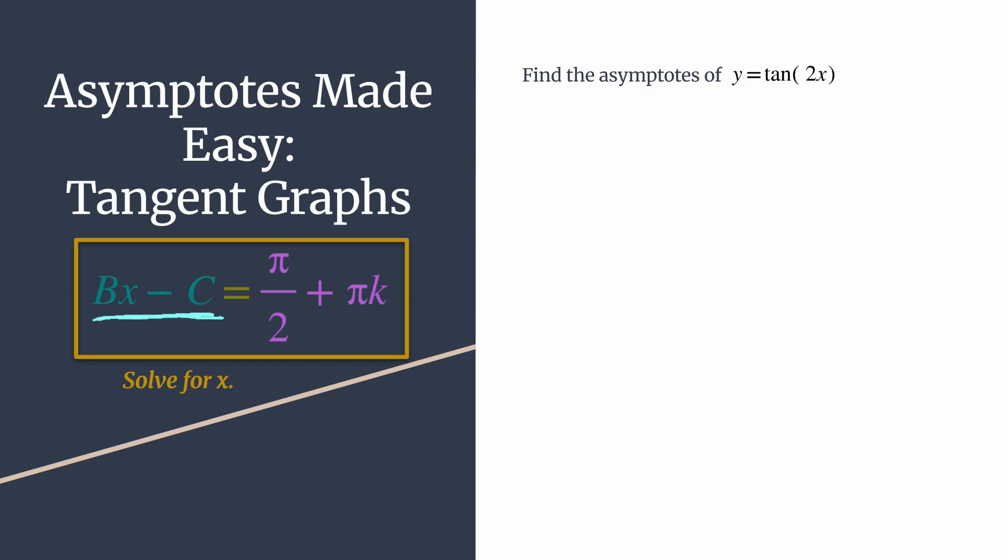We're trying to find the vertical asymptotes of y = tan(2x), so take your inputs of your tangent function, here it's just 2x, and set that equal to π/2 + πk. Now k is an integer, and we'll talk a little bit more about that in just a moment.